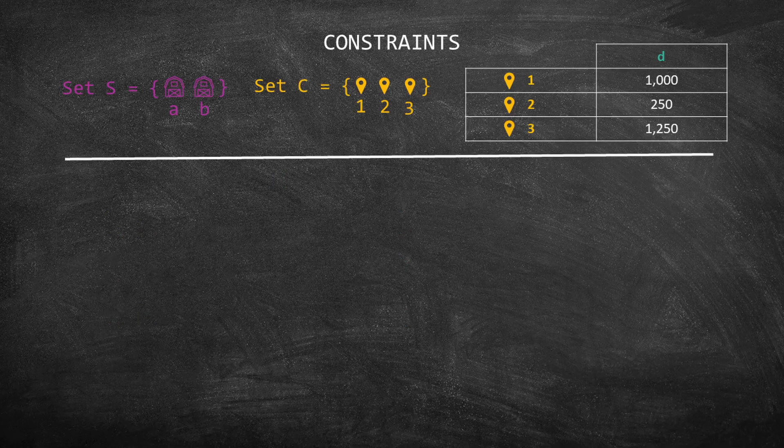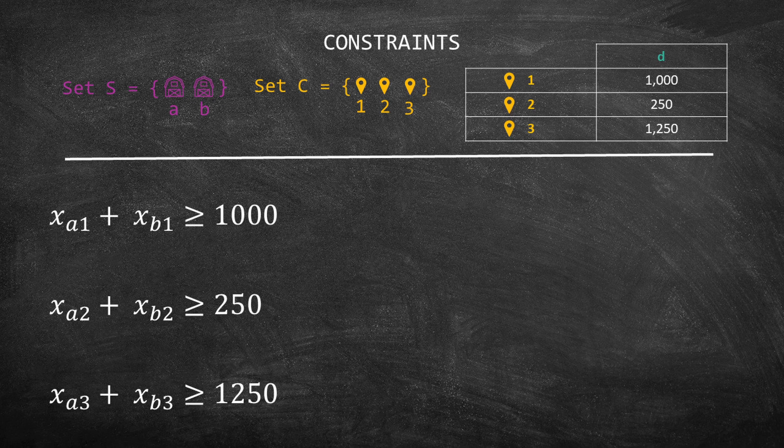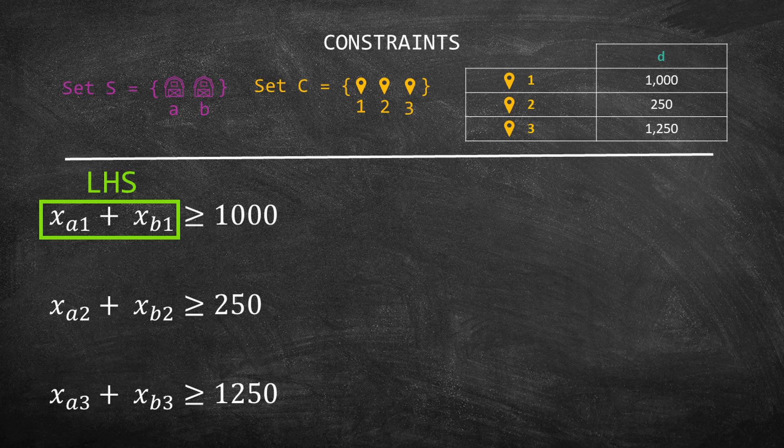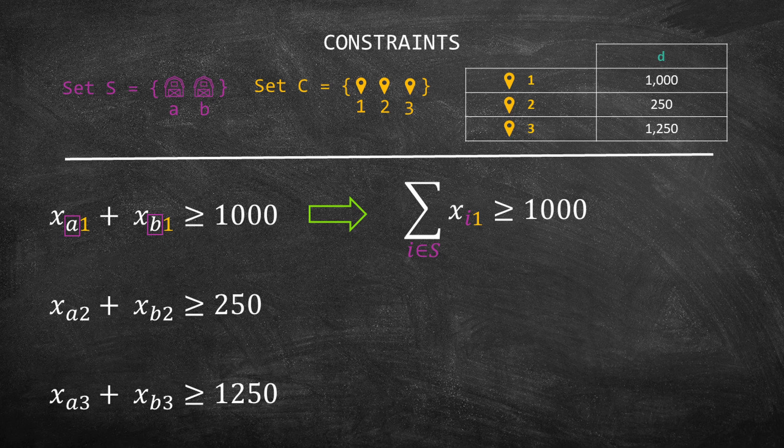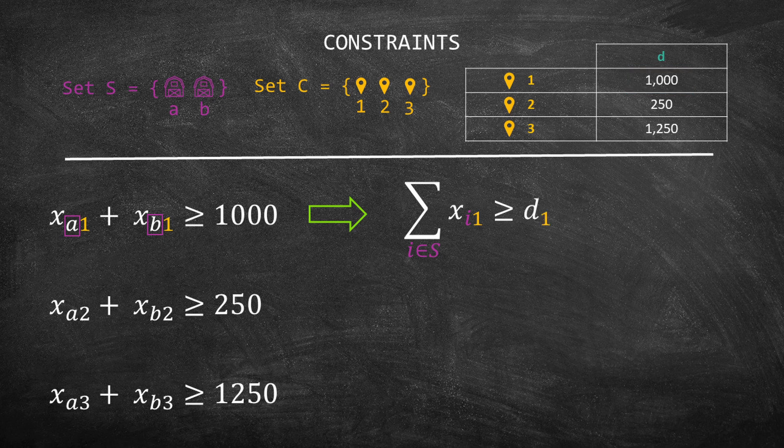Let's write the constraints. We have three constraints because there are three customers. If you check the left-hand side of the first constraint, we have xA1 plus xB1. We have the same customer, which is 1. In addition, we combine customer 1 with each one of the suppliers. Therefore, we can rewrite this constraint as the sum of I in set S of xI1 greater than or equal 1,000. But we know that 1,000 is the same as D index 1, so let me update this equation.